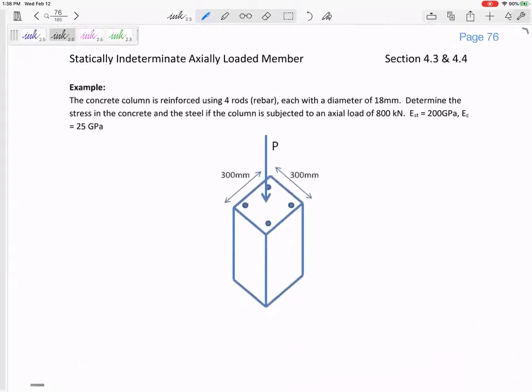All right, you've got a concrete column that's reinforced using rebar. There's four rods of rebar. Each of those rods of rebar have a diameter of 18 millimeters. Determine the stress in the concrete and the stress in the steel if the column is subjected to an axial load of 800 kilonewtons.